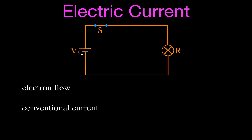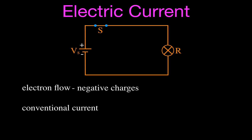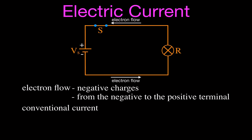The electrons are negatively charged, which means they're going to be repelled by the negative terminal of this source and attracted to the positive terminal. That means the electrons are going to flow in the counter-clockwise direction. You can think: if you put a negatively charged electron near the negative terminal, it would be repelled; near the positive terminal, it would be attracted. In general, electrons always flow from the negative to the positive terminal.